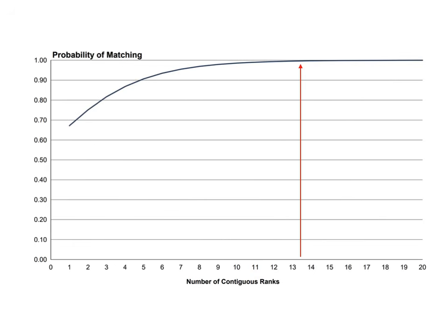This chart shows your probability of matching based on number of ranks as a USMD student. Once you get to around 13.5 places ranked, you have nearly a 100% probability of matching. If you're ranking 13 to 14 programs, you've been interviewed by that many programs, which means you're more than qualified. This slide should reassure USMD students — even if you only rank three programs, you still have over an 80% chance of matching. Anesthesiology is not as competitive today as it was 20 years ago, and you can match with much more ease.